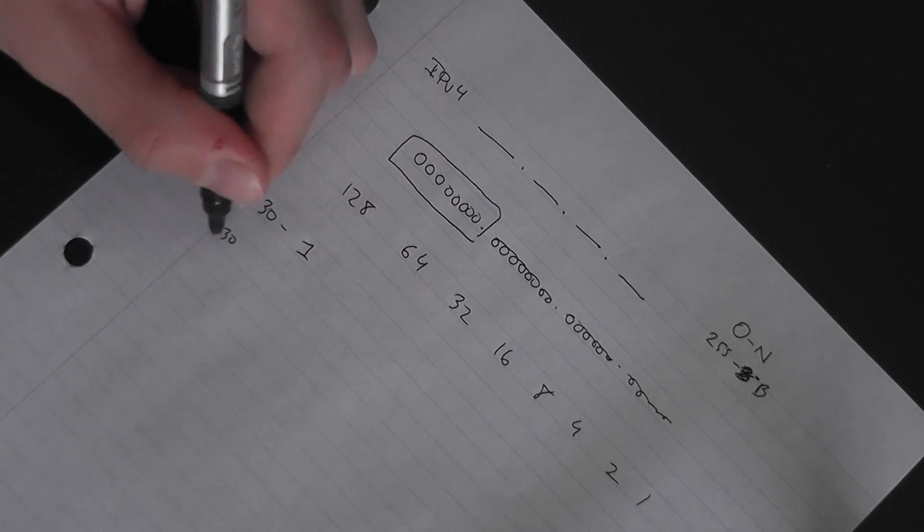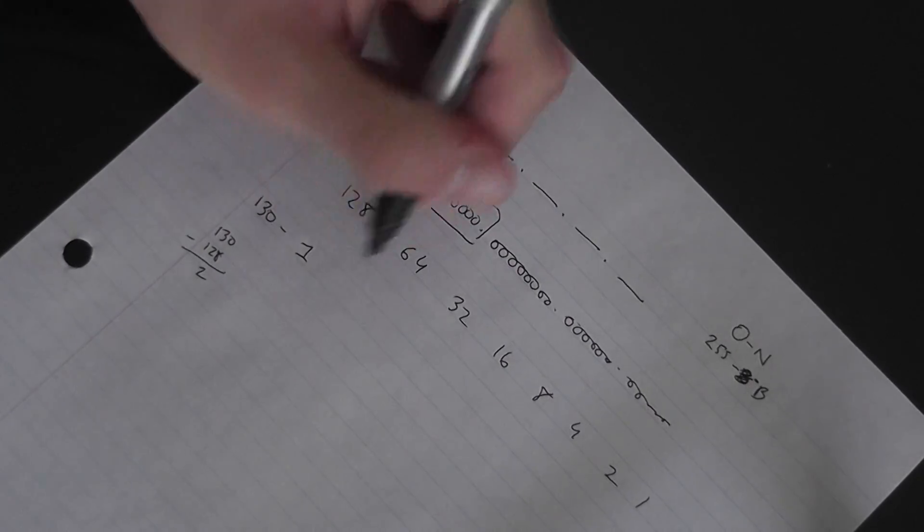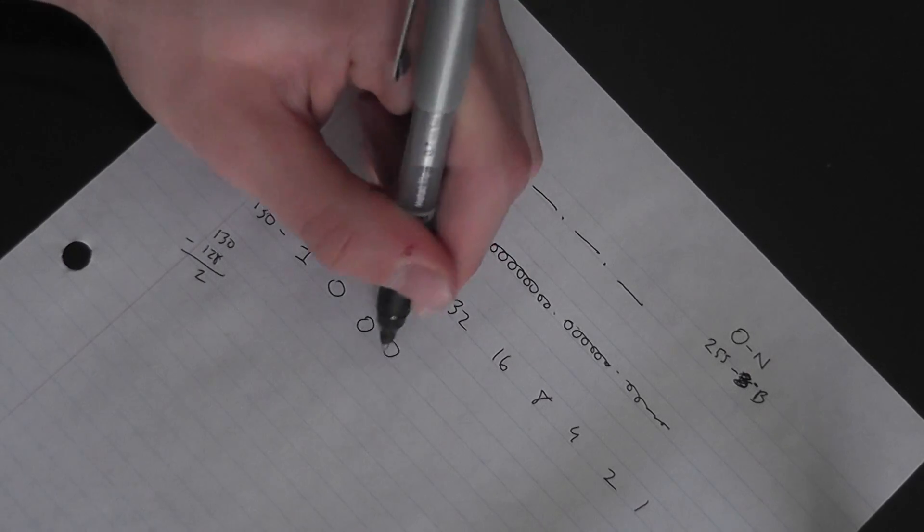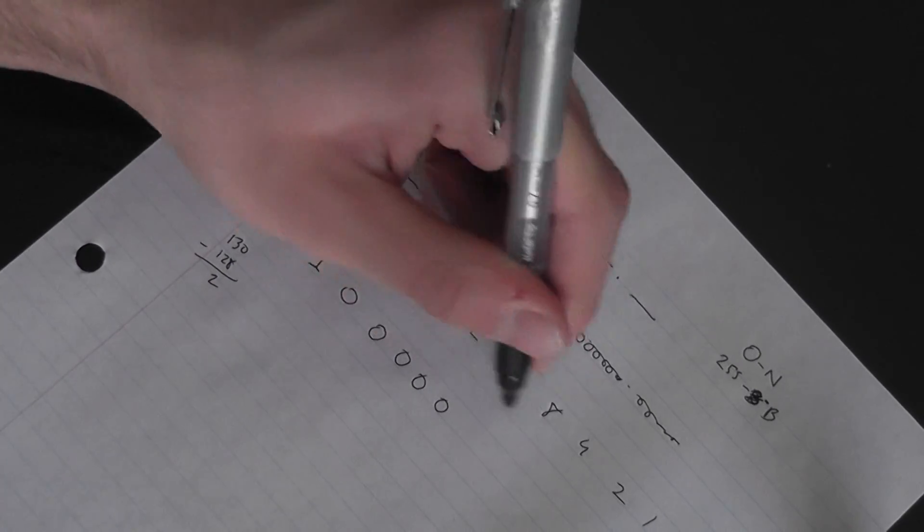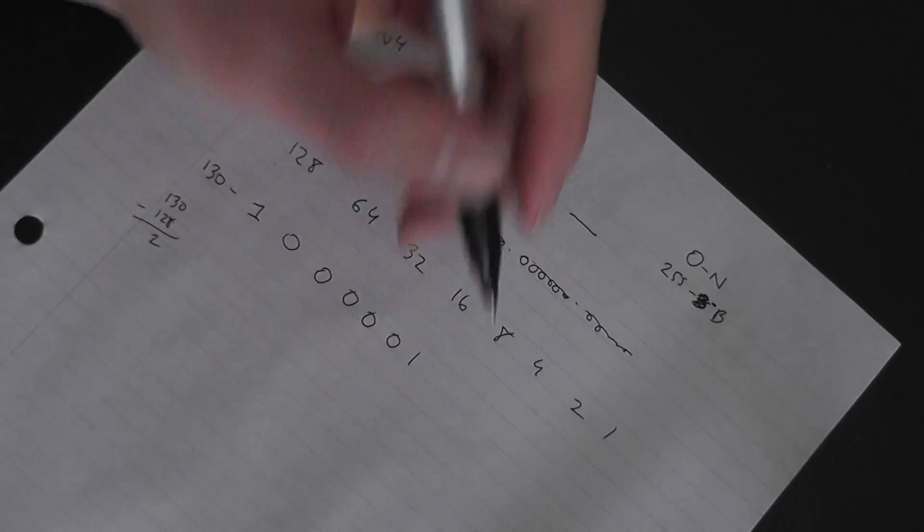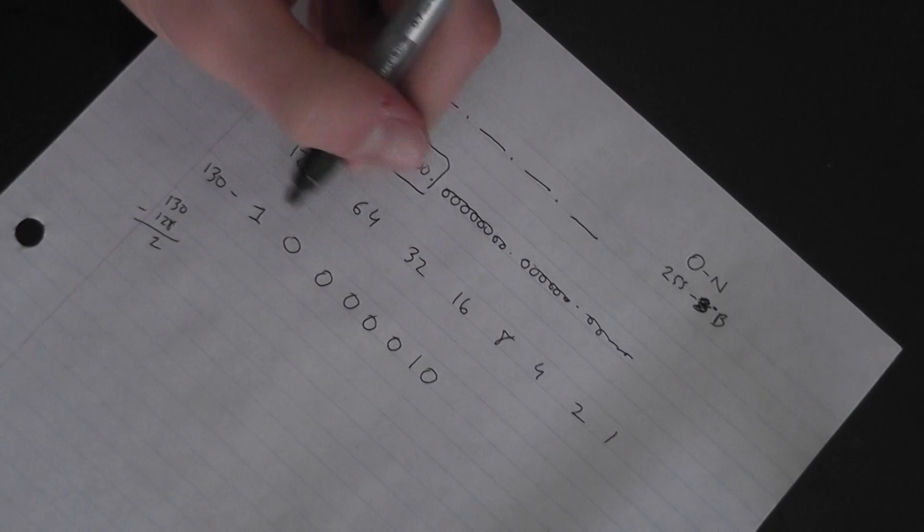Now you do 130 minus 128, that's 2. Two can't fit into 64, 32, 16, 8, or 4, but it could fit into 2 with 0 left over. So this would be 130 in binary.